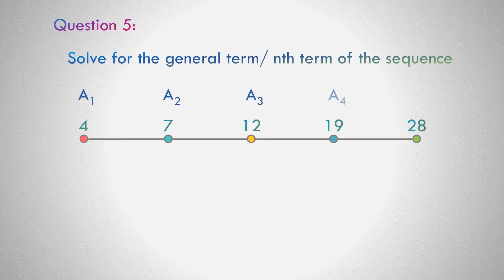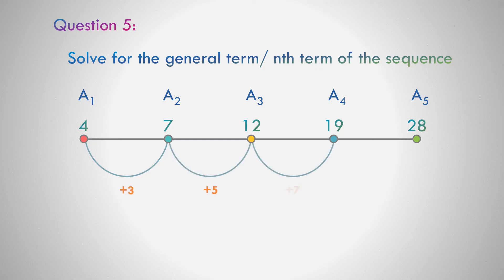Question number 5: In the sequence 4, 7, 12, 19, and 28 — what do you think is the pattern? Correct. The pattern from the first to second term is 3. If you add 2, the pattern becomes 5; add 2 again, it's 7; and again, it's 9. So let us use the formula a sub n equals n squared.